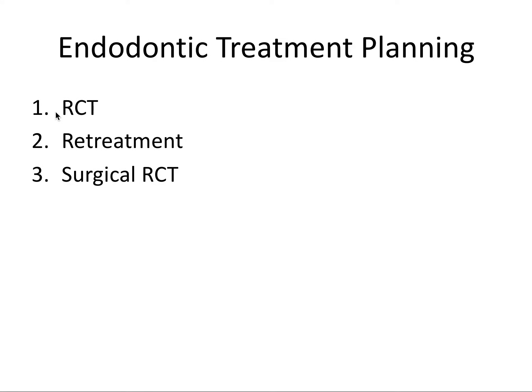Root canal treatment is the first treatment option for irreversible pulpitis, pulp necrosis, and or some apical diseases — all diagnosis classifications we talked about in the second video. You would re-treat if root canal treatment fails and the problem is in the canal. Surgical root canal treatment, otherwise known as microsurgery, is done if root canal treatment fails and the problem is at or just outside the apex. The decision about which one to do is based on where the problem originates.